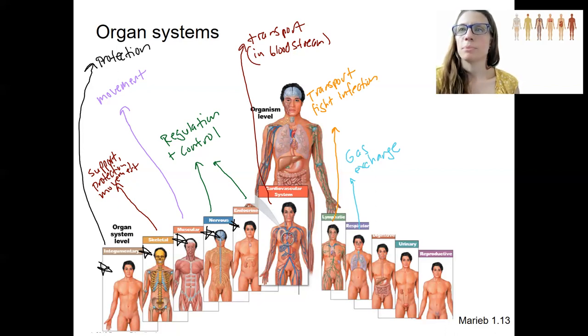Digestive system. Obtain nutrients, right? Take in food. Process the food. And absorbing food. So take in and absorb food. Nutrients, really. Carbohydrates, fats, proteins, vitamins, etc.